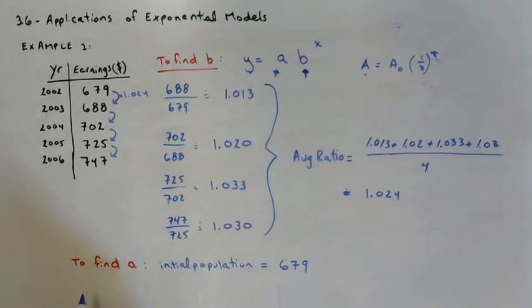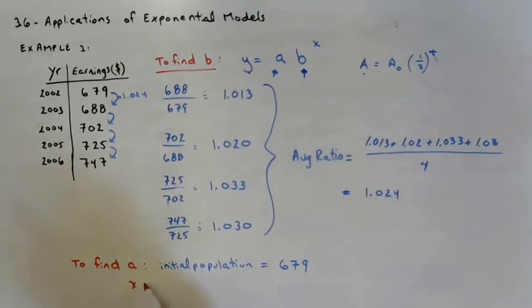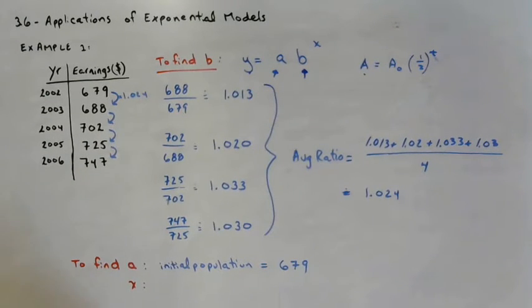And what is X? What does X represent? Years. Yeah, years after 2002. So the year 2003 is year one. Does that make sense?